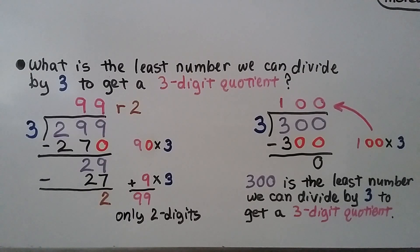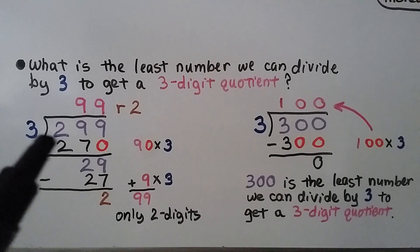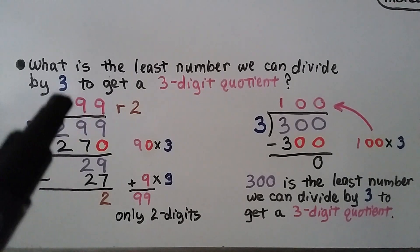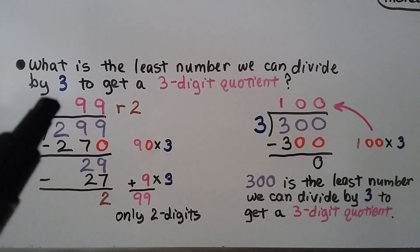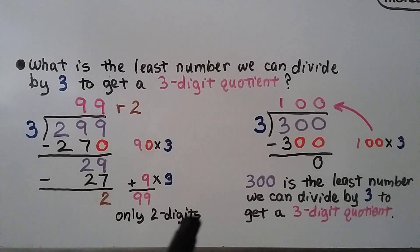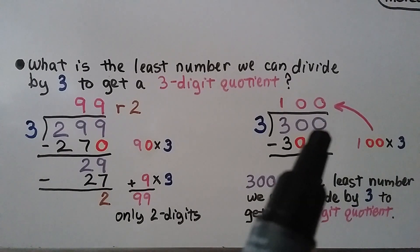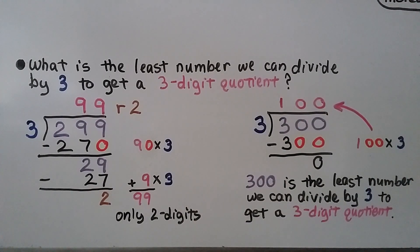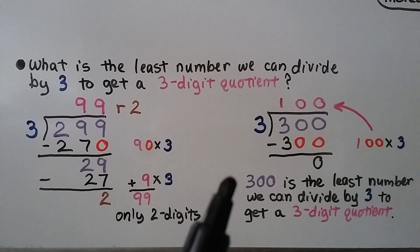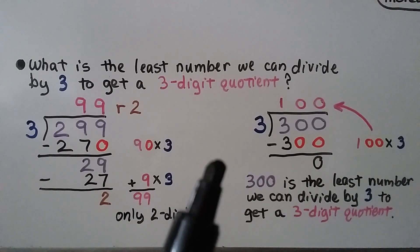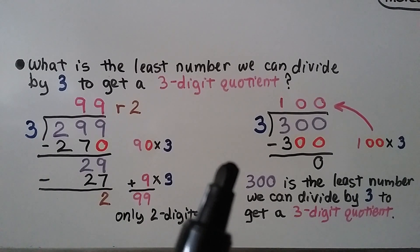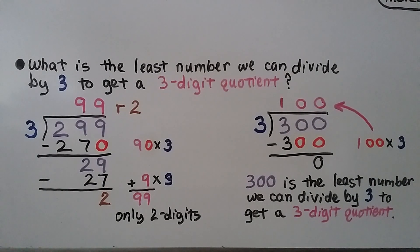This problem asks: what is the least number we can divide by 3 to get a 3-digit quotient? If we do 299 divided by 3, we get a 2-digit quotient of 99. But if we do 300 divided by 3, we think: 100 times 3 is 300 — there's our 3-digit quotient. So 300 is the least number we can divide by 3 to get a 3-digit quotient. Similarly, 200 divided by 2, 400 divided by 4, 500 divided by 5, and 600 divided by 6 would each be the least numbers to produce 3-digit quotients for those divisors.